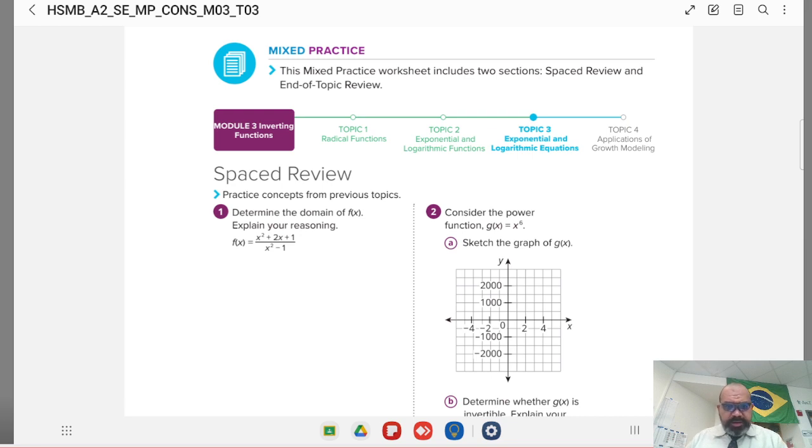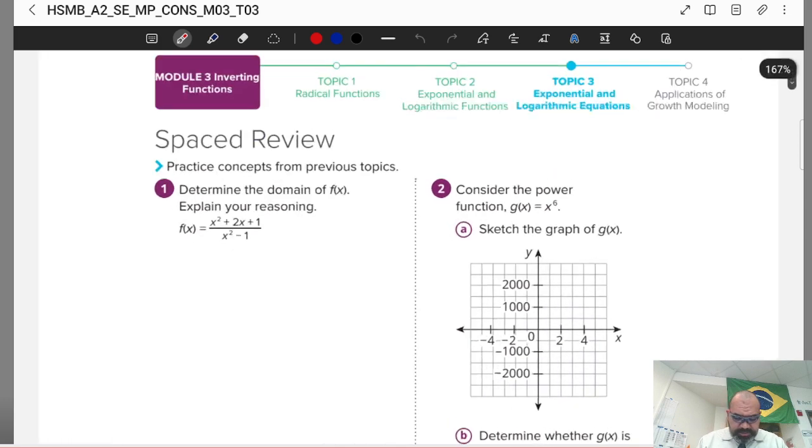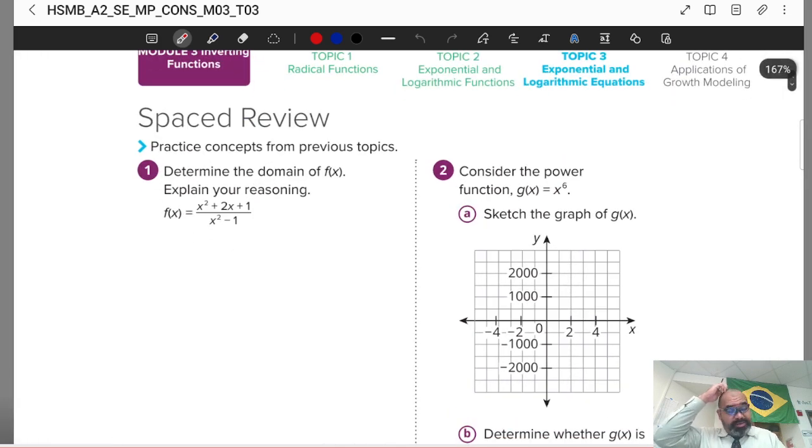Starting with this problem here, it's easy to determine the domain of the function. To determine the domain, you need to check where we have problems. To see problems, it's in the denominator. Why the denominator? Because it's where I have a restriction - it can never be zero.